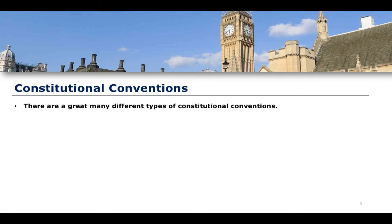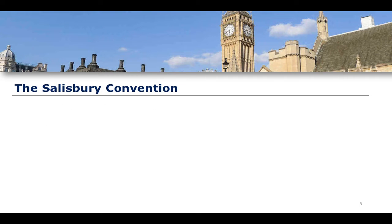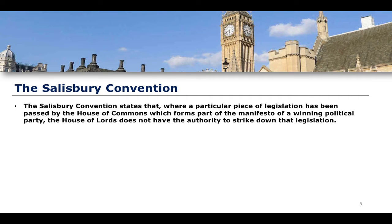There are a great many different types of constitutional convention, and as we go through various other topics within constitutional law, we will spend time talking about each of these in more detail. One notable example is the Salisbury convention. Simply put, the Salisbury convention states that where a particular piece of legislation has been passed by the House of Commons and that legislation forms part of the manifesto of the winning political party, then the House of Lords by convention does not have the authority to strike down that legislation.